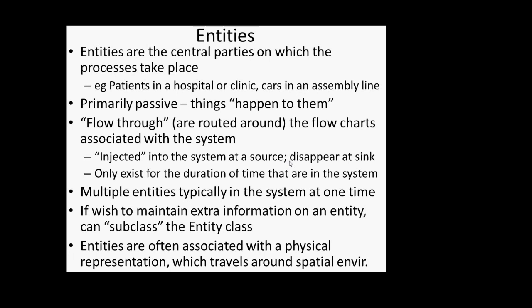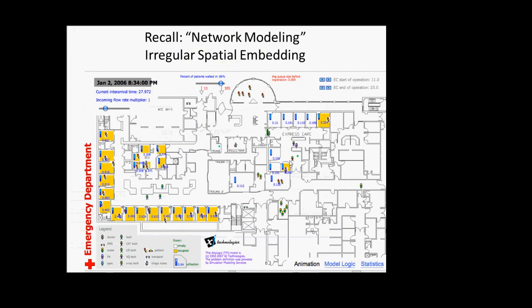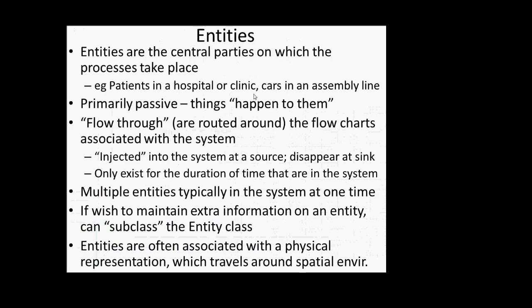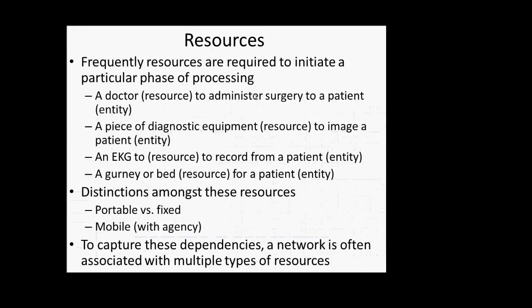Both discrete event modeling and agent-based modeling can be levels of description of the same situation from different perspectives, and both can be going on in parallel. An agent can be richly embedded in a network of social connections while at the same time sitting with a broken arm being imaged in an x-ray machine. The agent's health status is evolving while they're waiting in a queue for a doctor. We'll have queues, and often there'll be multiple entities within a given queue. Entities are often associated with a physical, visual representation that travels around.